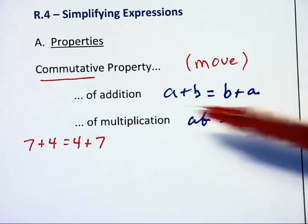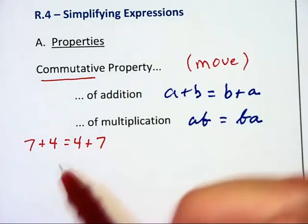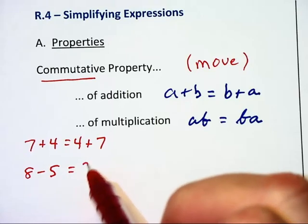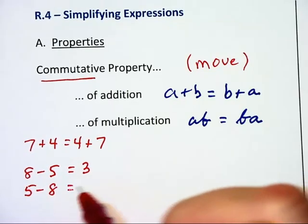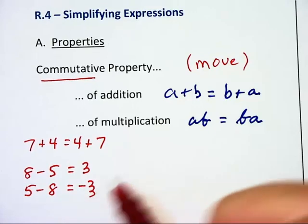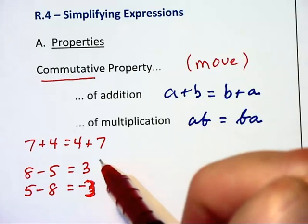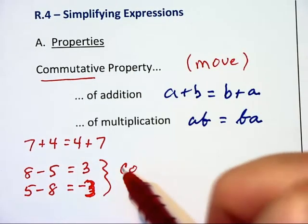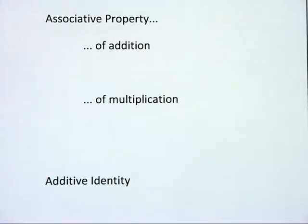Notice that addition and multiplication are commutative, but subtraction and division are not. For example, 8 - 5 = 3, but 5 - 8 = -3, not 3. The point is that subtraction is not commutative.